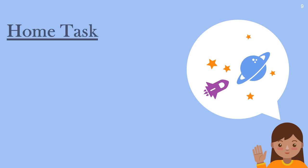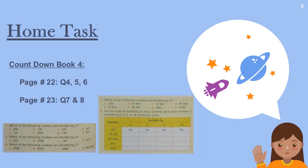Now for your home task: from your Countdown Book 4, page number 22, do question numbers four, five, and six. From page number 23, do question numbers seven and eight.